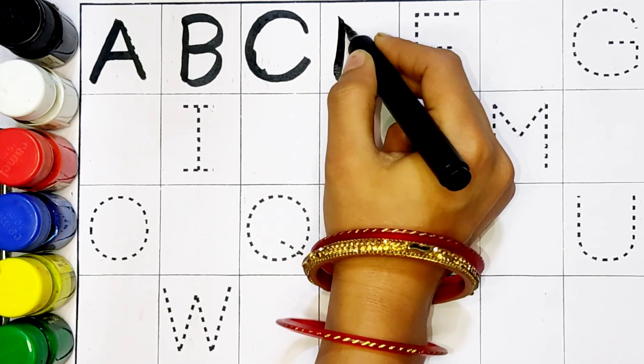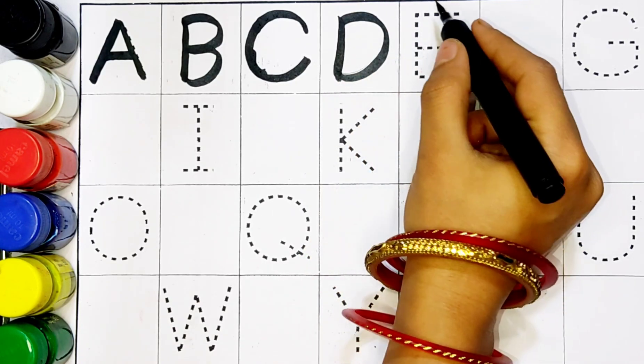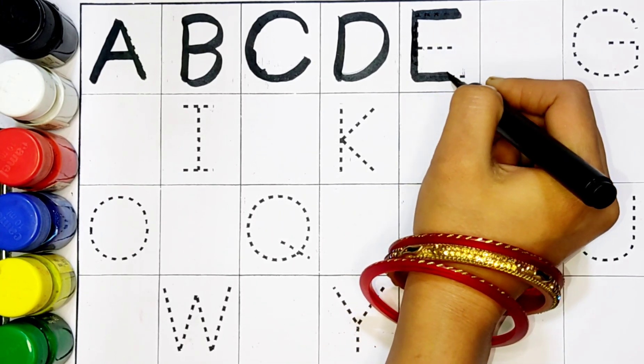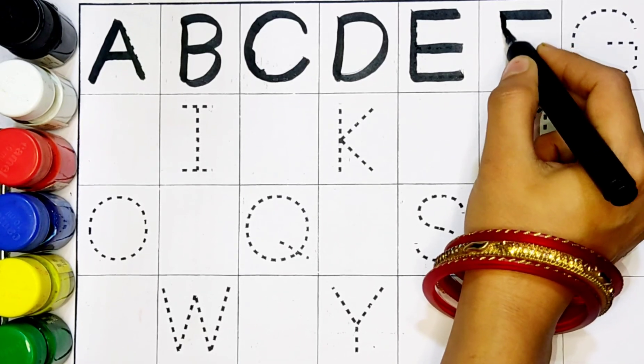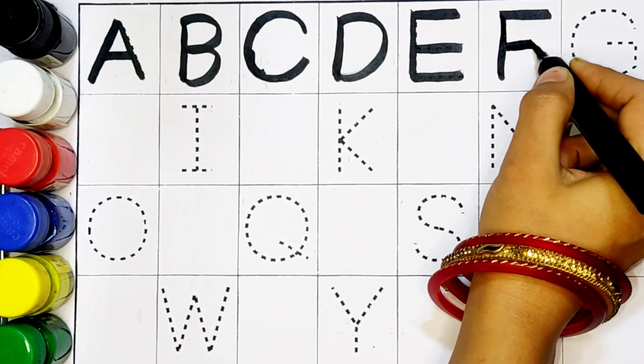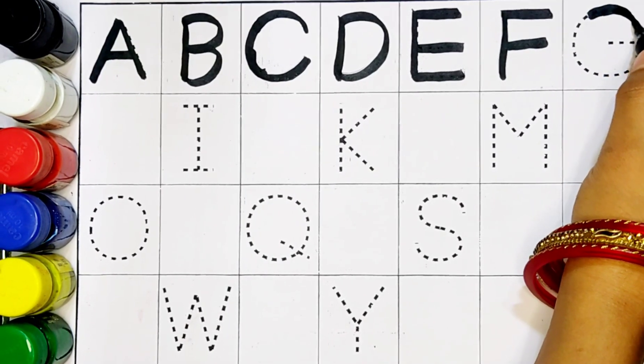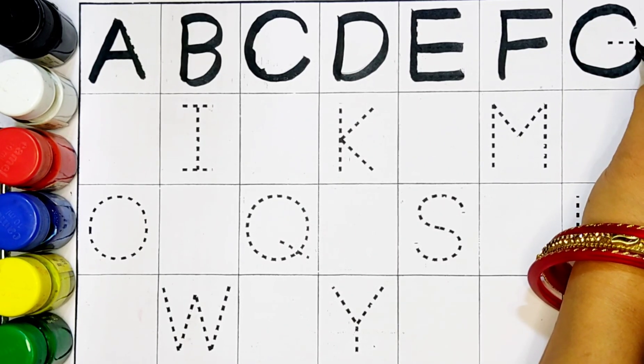D, D for Dog. E, E for Elephant. F, F for Fish. G, G for Girl.